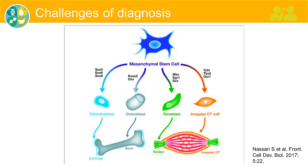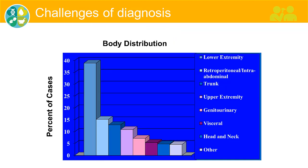So sarcomas can really be anywhere in the body and represent multiple types of tissues, such as bone, fat, nerves, and blood vessels. Different from a carcinoma, these tumors can really occur anywhere. When we look statistically, the most common sites of sarcomas are in the extremity, particularly the lower extremity, followed by the abdomen and then the trunk. But really, you can have a sarcoma anywhere, and that is one of the challenges in caring for these patients.